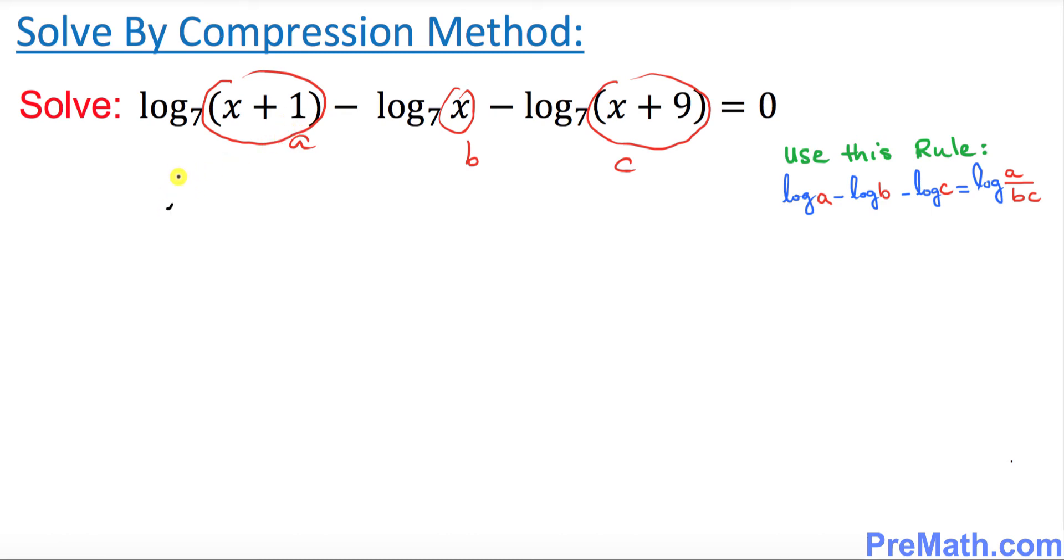This simply becomes log of (x+1) on the top, and whenever you see minus sign you divide. So x is going to be at the bottom, and over here you see again minus sign, that means this part c is going to be at the bottom as well in the denominator. And you have a base seven over here equal to zero.